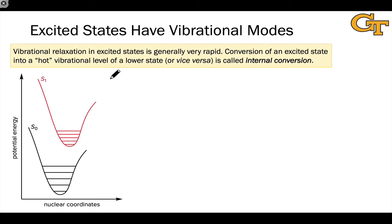The first point we should make here is that excited states have various vibrational modes, and there is vibrational structure within each potential energy surface or electronic state level. There are a variety of vibrational levels that the molecule can occupy, and they're shown here as the horizontal lines.